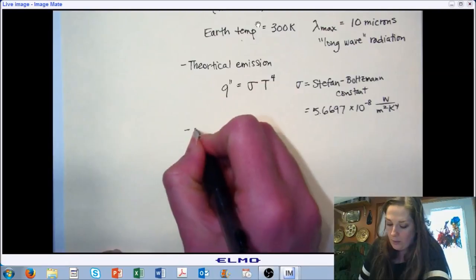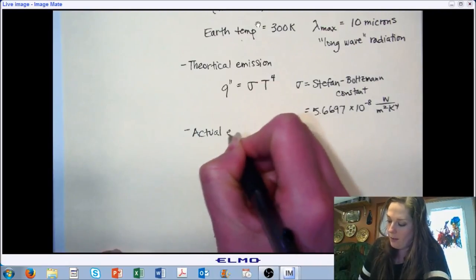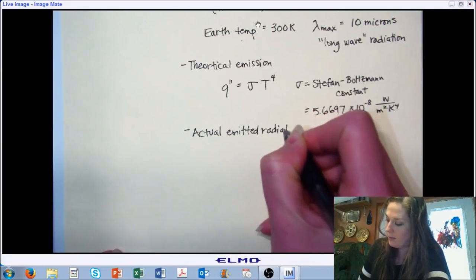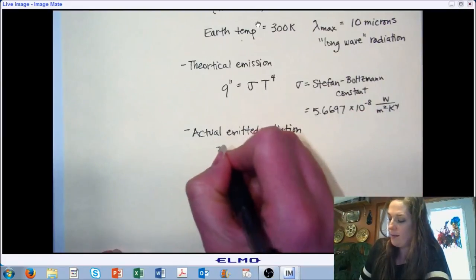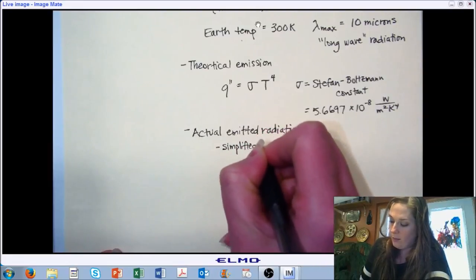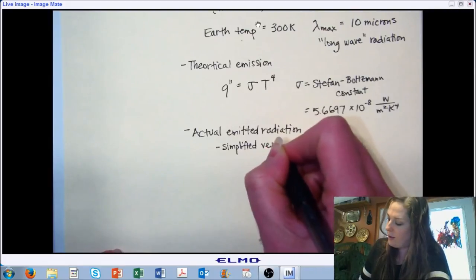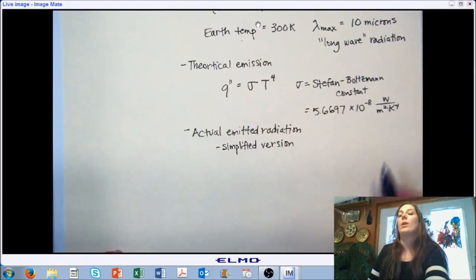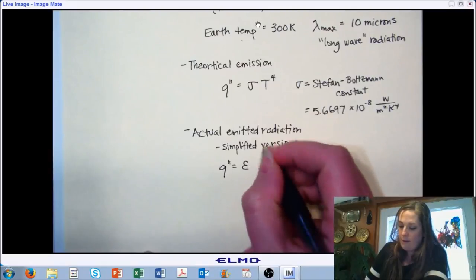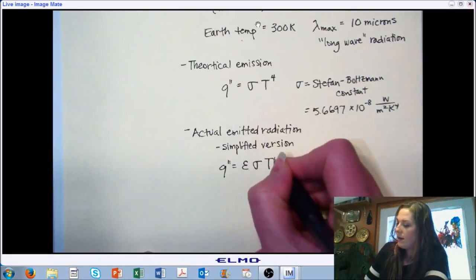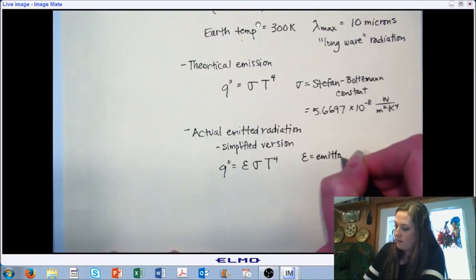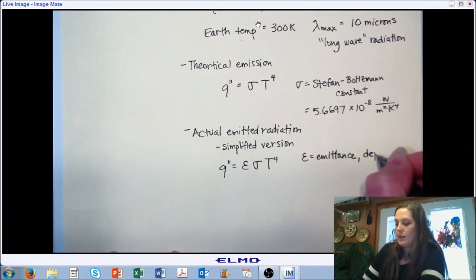The actual emitted radiation is not the same as theoretical emitted radiation. There are no absolutely perfect emitters on Earth's surface that we'll be dealing with. So we use a simplified version of this equation with corrections for the reality of actual emissions. We add the value of emittance as a correction factor, and it depends upon the characteristics of the surface.